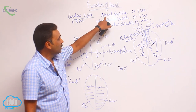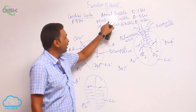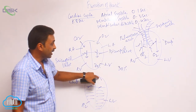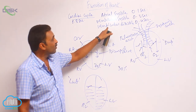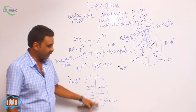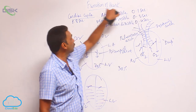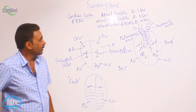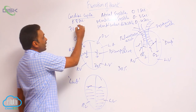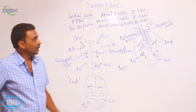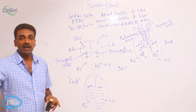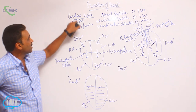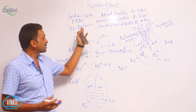So, atrial systole — when the atria are contracting — is completed in 0.1 seconds. Ventricular systole — when the ventricles are contracting — is completed in 0.3 seconds. During ventricular systole, the atria are already in diastole. That is followed by ventricular diastole — the ventricles relaxing — which takes 0.4 seconds. Total: 0.1 + 0.3 + 0.4 = 0.8 seconds. So one cardiac cycle is completed in 0.8 seconds, when the heartbeat is 70 to 80 times per minute. If the heartbeat increases to 90 or 100, the time to complete the cardiac cycle is reduced.